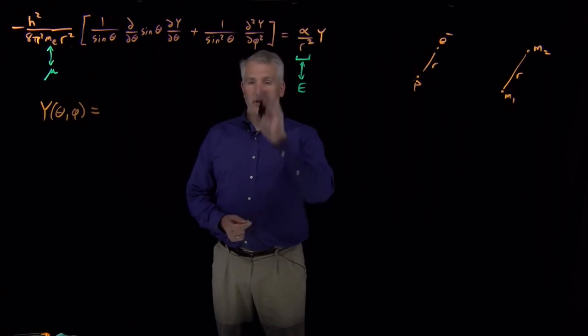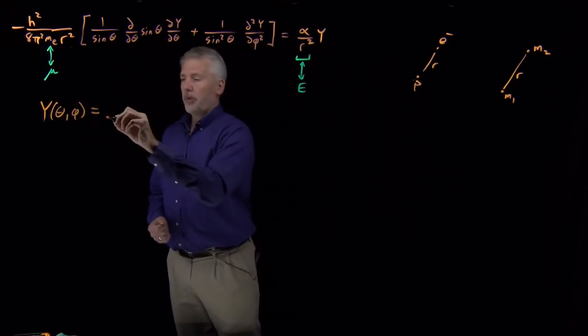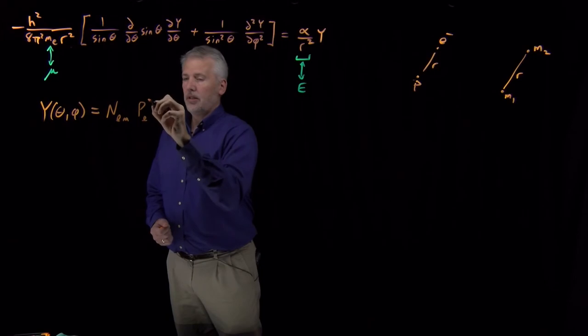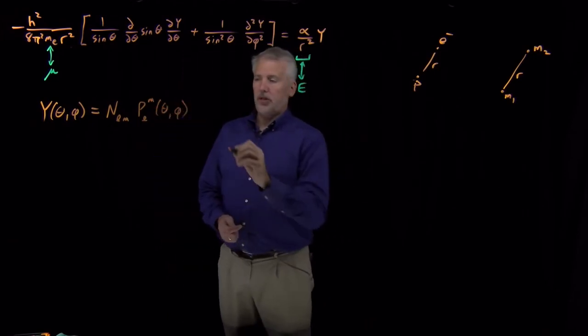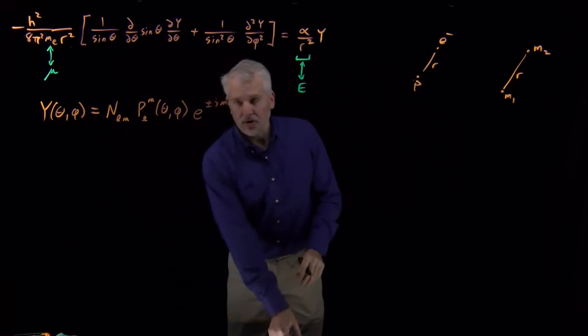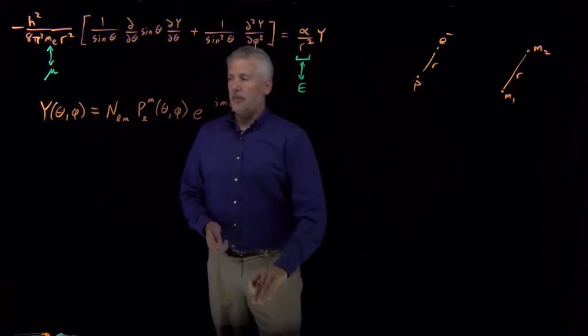And the solutions that we saw for the rigid rotor are going to be exactly the same as the solutions for this angular term in the hydrogen atom wave function. And what those looked like for the rigid rotor was some normalization constant, some polynomial that looks like a spherical harmonic, and then e to the i m phi, where m could be a positive number or a negative number.